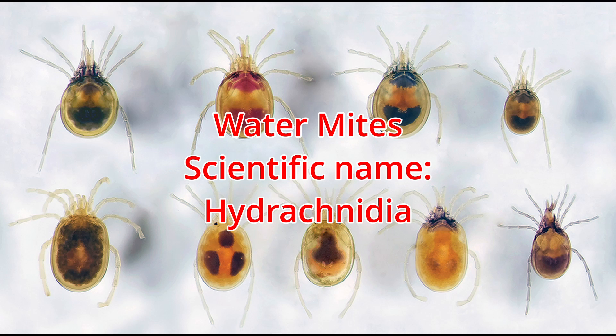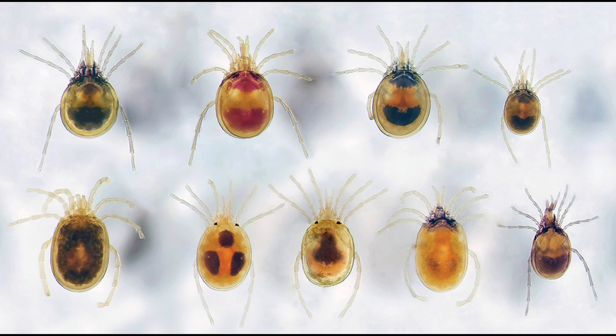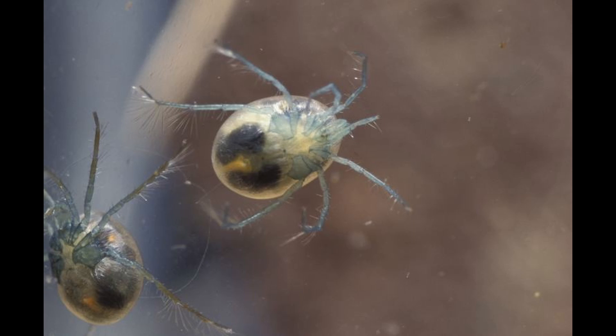Water mites. Scientific name: Hydrachnidiae. Young mites are considered parasitic. They don't usually cause the death of their host, but they can damage its health if the population gets too high. The larvae are the only water mite life stage to have a parasitic relationship with other organisms. When they find a host, the larvae latch onto them with their little claws and feed on the blood until fully grown or brushed off.